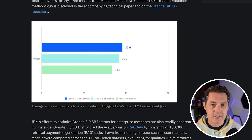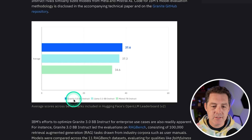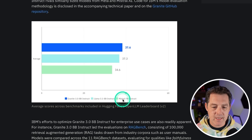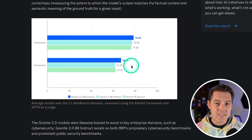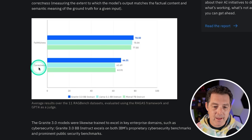Let's take a look at some benchmarks. This is Hugging Face's Open LLM Leaderboard V2. Compared to similarly sized models — Granite 3.0 8B Instruct, Llama 3.1 8B Instruct, and Mistral 7B Instruct — Granite 3.0 leads the pack. Here's a benchmark showing how good it is at RAG: against those same two models, Granite comes in at the top for both faithfulness and correctness.